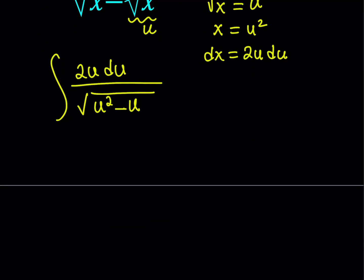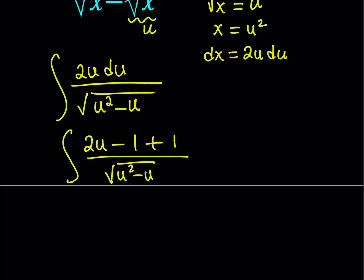I'm going to subtract 1 from 2u and add 1 back. The reason why I subtract 1 from 2u is because the derivative of u squared minus u is 2u minus 1. If you differentiate that function you get 2u minus 1. But I have 2u, not 2u minus 1. So what I'd like to do is subtract 1 but then add it back so it balances out.